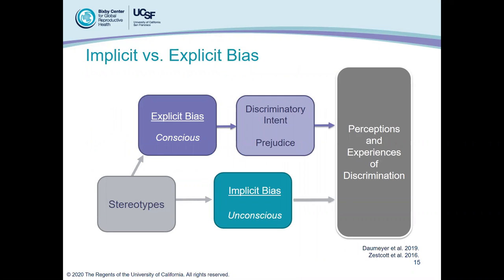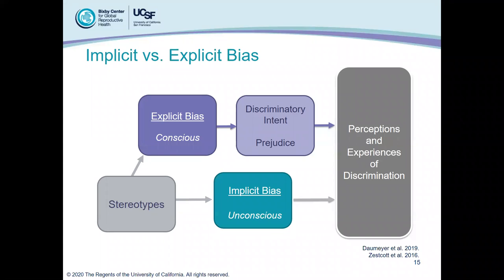Just as explicit bias contributes to discrimination and health disparities, implicit bias does too. Just because implicit biases are unconscious doesn't mean they don't have important consequences or result in experiences of discrimination. Research shows that because discrimination from implicit bias is unintentional, we tend to hold ourselves and others less accountable for its impacts — we give ourselves a pass. But whether the bias is conscious or unconscious, it can have the same impact on the client.